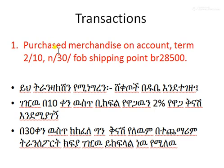Transaction number one: purchased merchandise on account. Term 2/30, FOB shipping point, for $28,500.